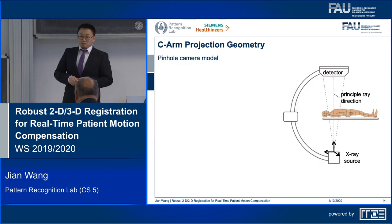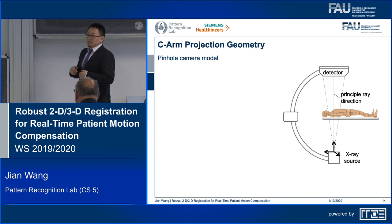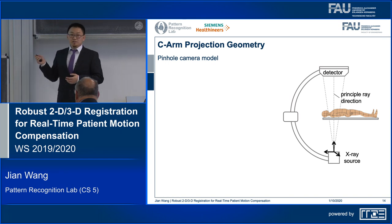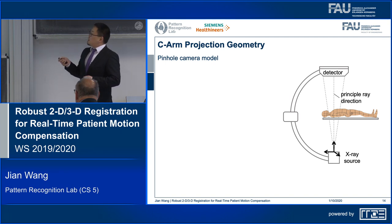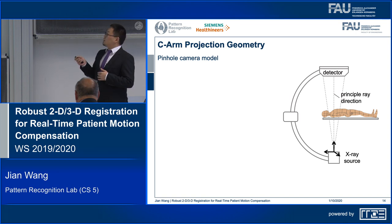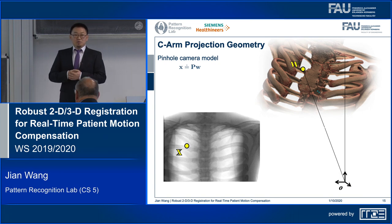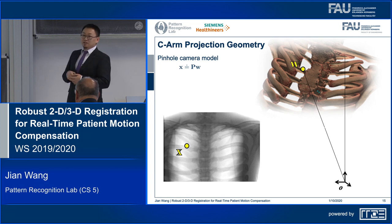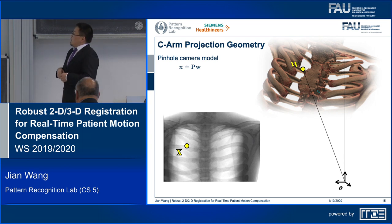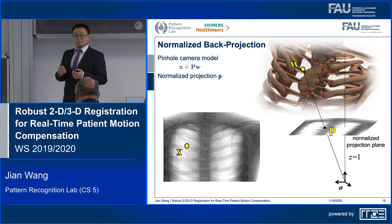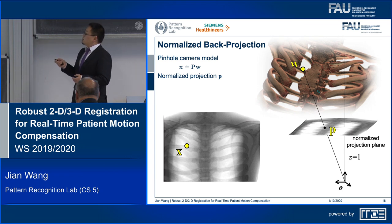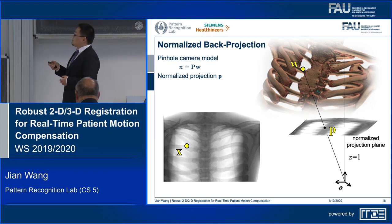I will follow exactly this principle to introduce the point-to-plane correspondence model that solves 3D motion estimation out of 2D. To begin with the PPC model, I start with the C-arm projection geometry. The C-arm system can be modeled as a pinhole camera, and its principal ray direction is perpendicular to the detector plane. If we place the patient in the C-arm projection geometry, we can say that a 3D point W is projected as a 2D point X.